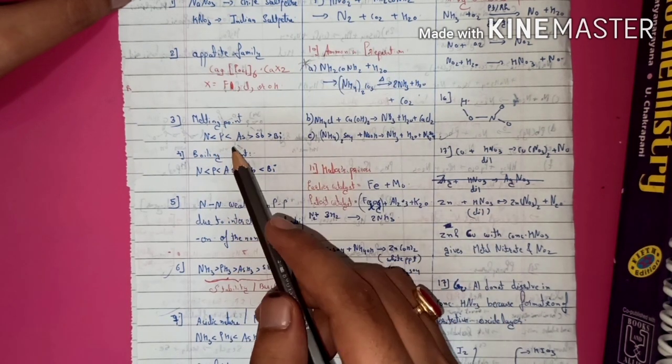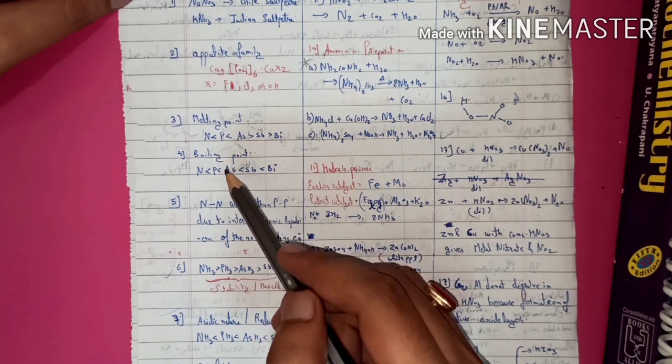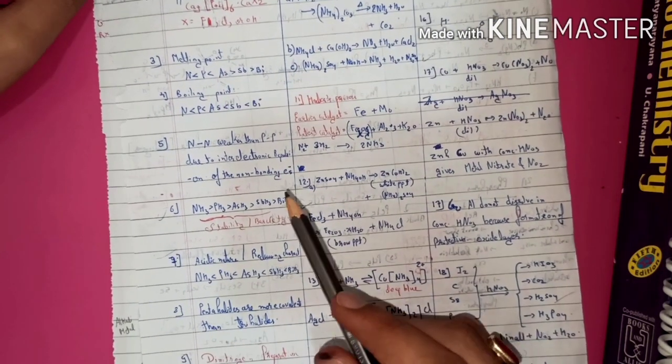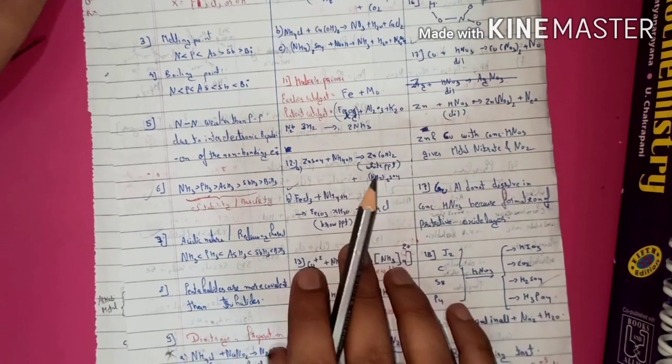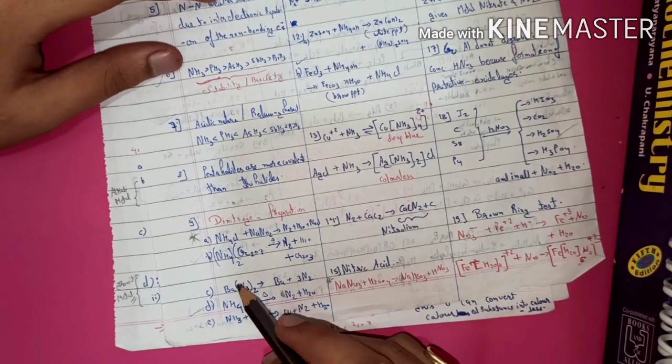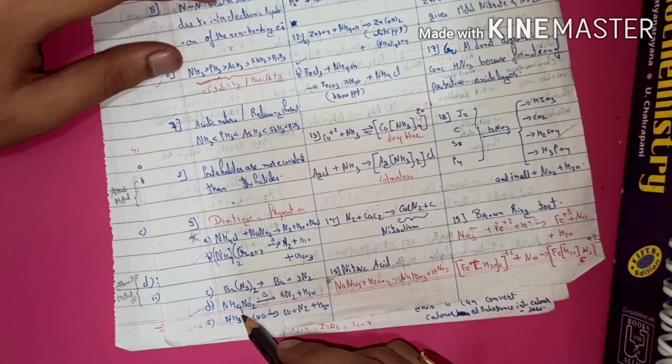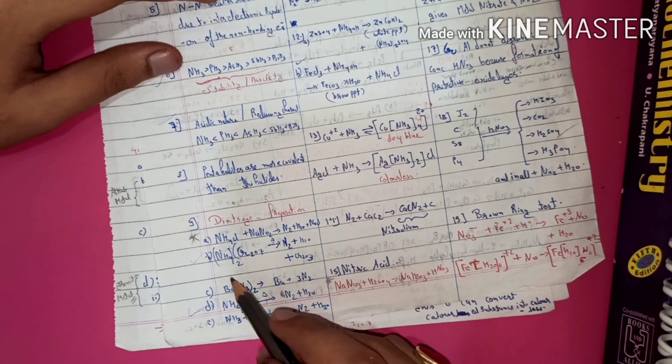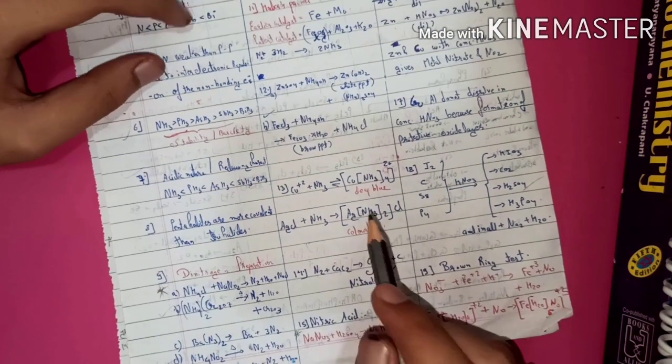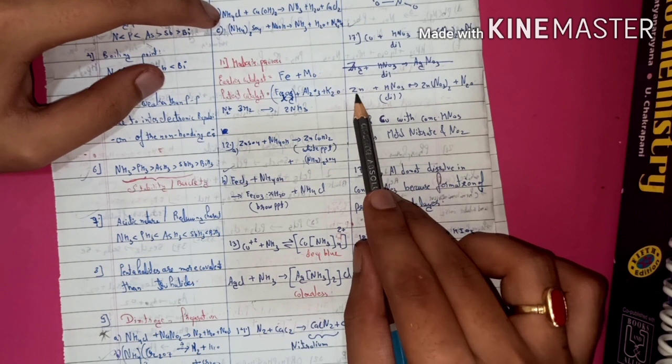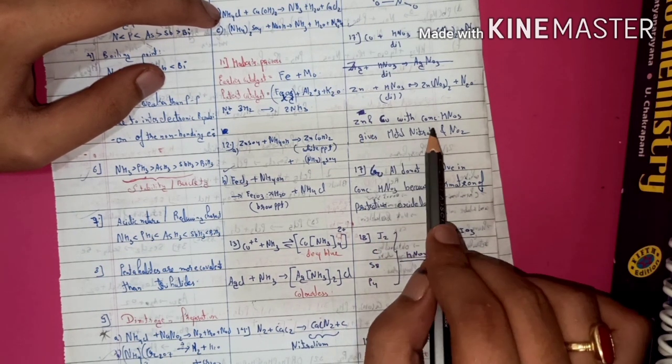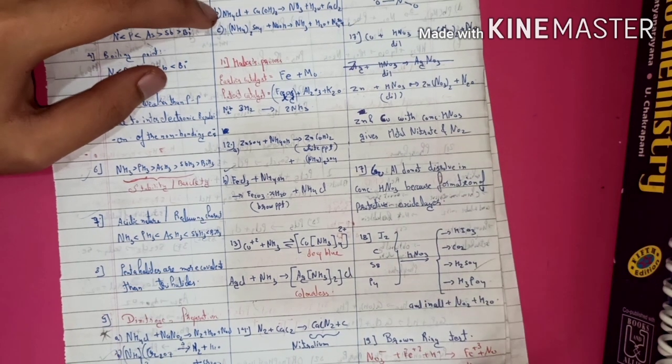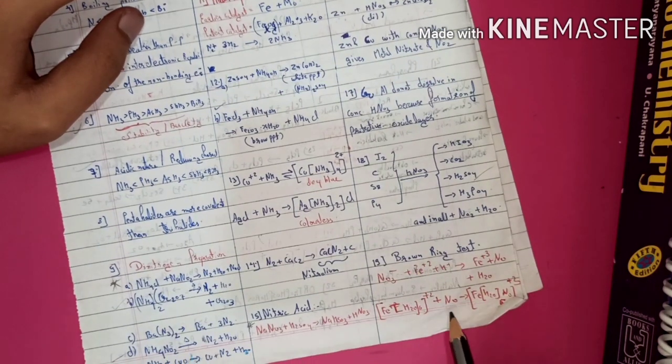You have to write the trends of melting point, boiling point, trends of stability, trends of acidic nature and reactions like what you will get when you will heat ammonium nitrite, ammonium chromate and reaction of zinc with dilute HNO3, reaction of zinc with concentrated HNO3, brown ring test and compounds of brown ring test.